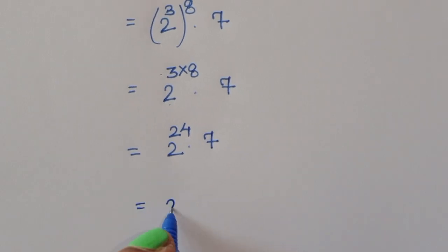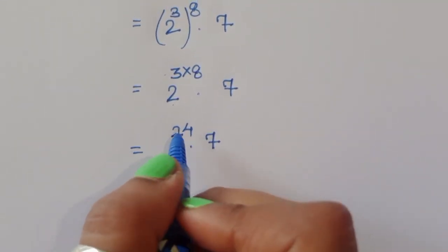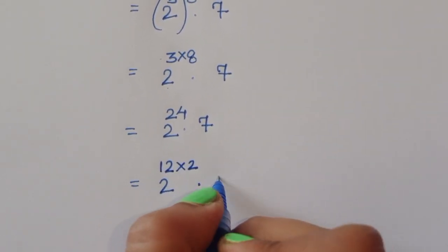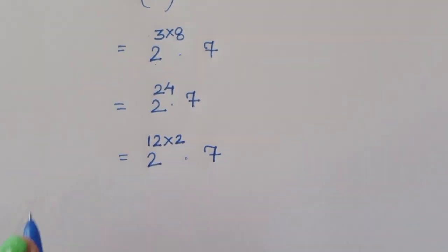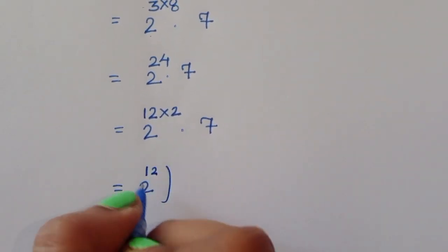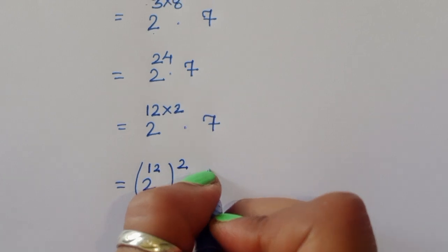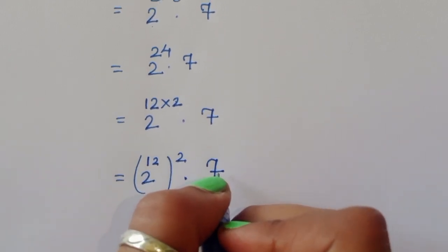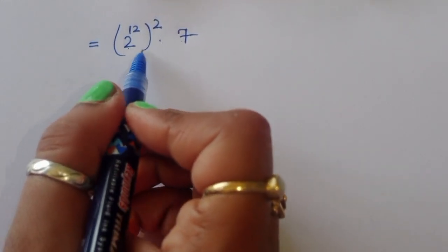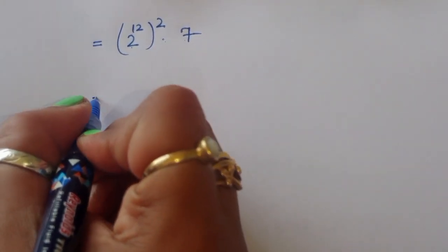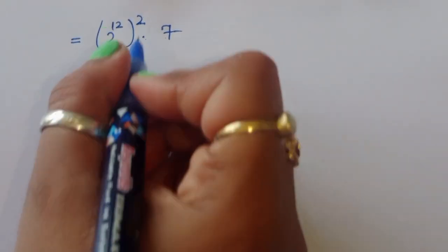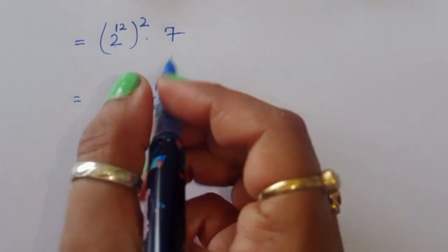Now 2 power 24 — we can write 24 as 12 times 2, so 2 power 24 equals 2 power 12 whole square. So the expression becomes 2 power 12 whole square times 7. We can also write this as 2 power 12 times 2 power 12 times 7.